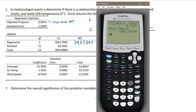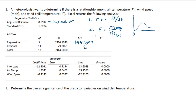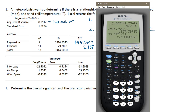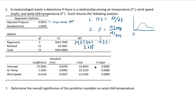The other one is 29.2051 divided by 11, and that's 2.655. Now you simply divide the top by the bottom: 1957.397 divided by 2.655 gives you 737.249. So we got the F test statistic.